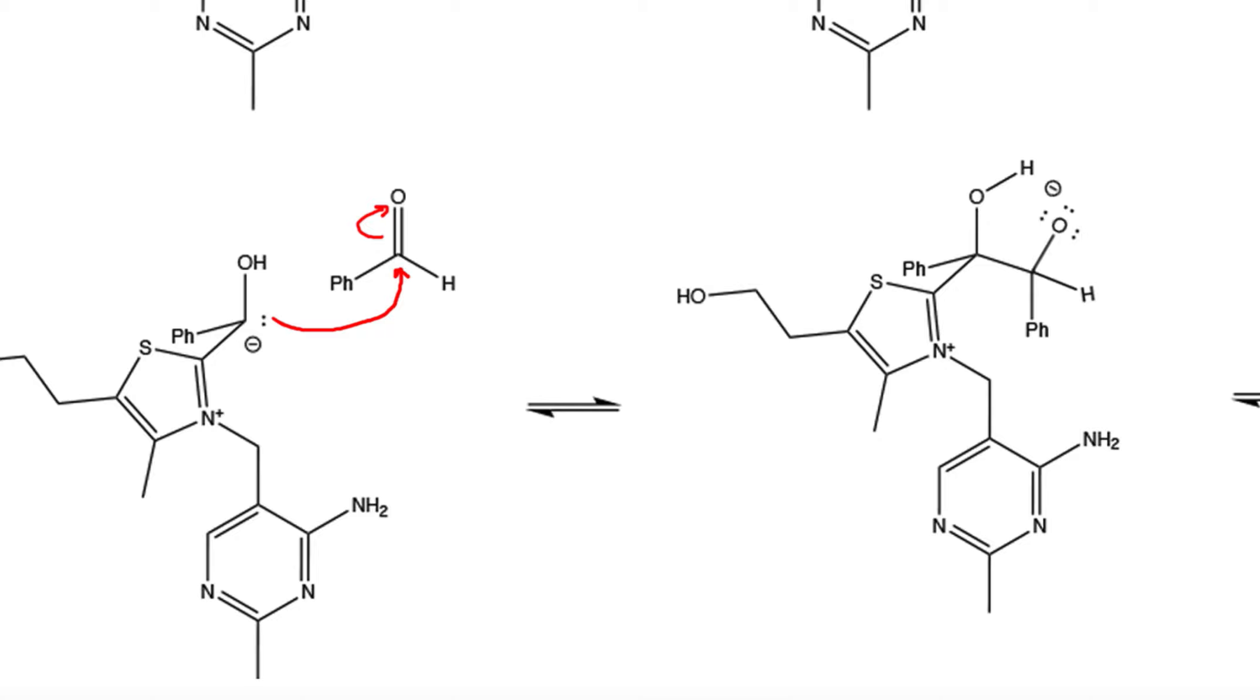Next, we get an intramolecular proton transfer. The lone pairs on this oxygen grab that hydrogen, the bonds break, and the electrons are placed onto this oxygen.